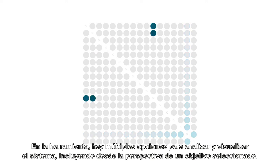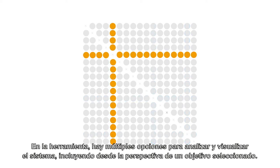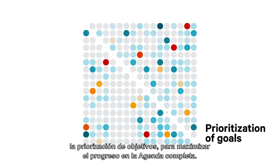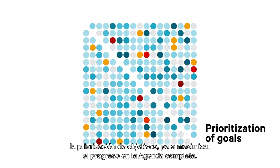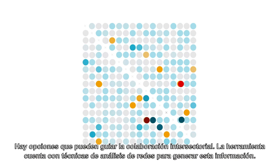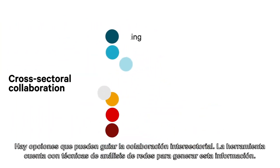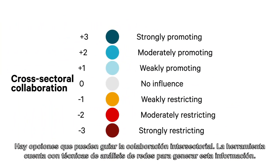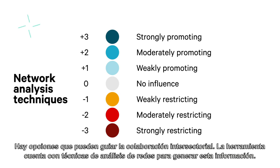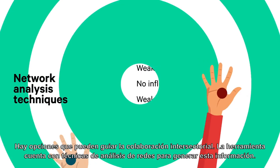In the tool there are multiple options to analyse and view the system, including from the perspective of a selected goal. The options are developed in particular to inform prioritisation of goals to maximise progress on the agenda as a whole. There are options that can guide cross-sector collaboration. Network analysis techniques are embedded in the tool to provide these insights.